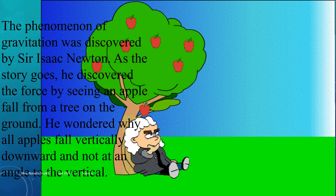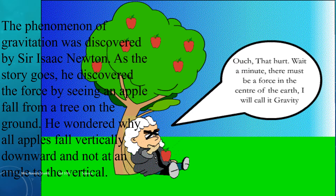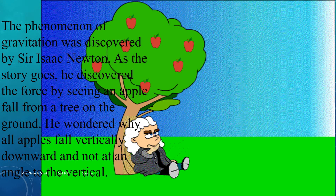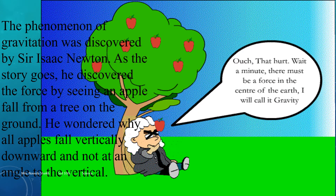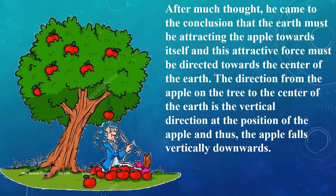The phenomena of gravitation was discovered by Sir Isaac Newton. As the story goes, he discovered the force by seeing an apple fall from a tree to the ground. He wondered why all the apples fall vertically downwards and not at an angle. When he was sitting beneath an apple tree, the apples were falling just below it — not flying away or falling at a particular angle, just going vertically downwards.